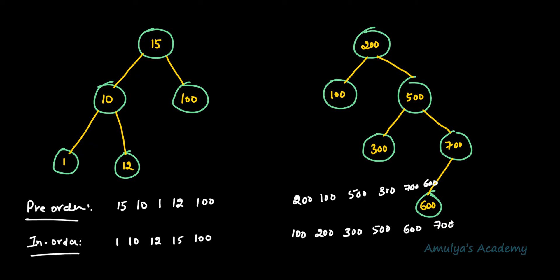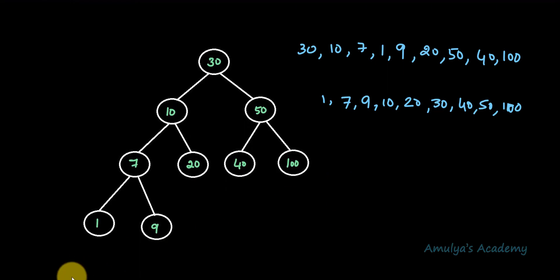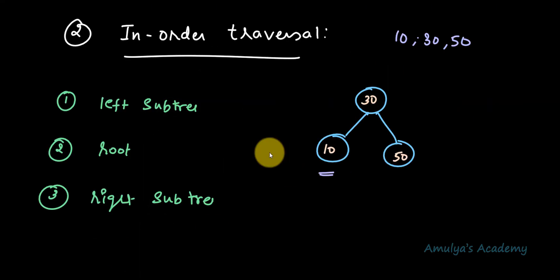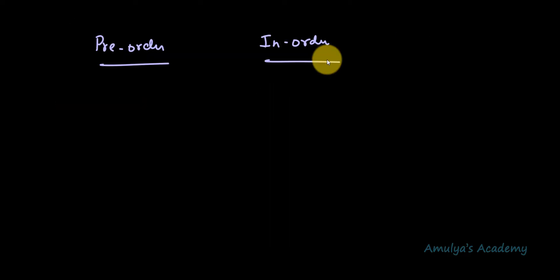You can now check your answer and compare it here. This covers pre-order and in-order — two traversal algorithms. We have two more traversal algorithms that we will discuss in the next tutorial. I know it can be confusing to remember the order of visiting nodes for each algorithm, so here's a small tip.